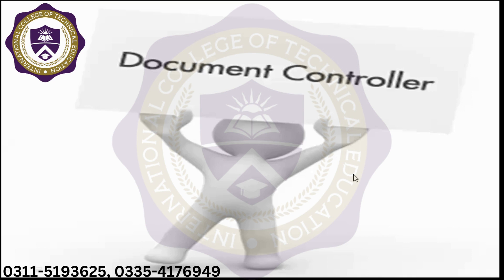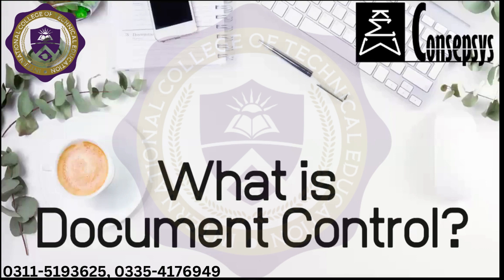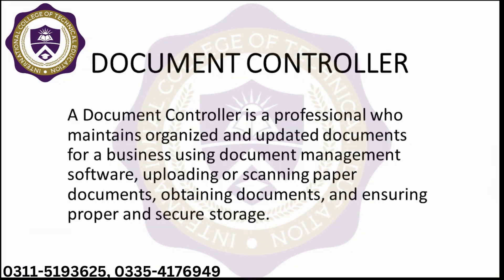As you can see in the image, the stages are: control, create, review, approve, and publish. First you have to create, then you have to review through the documents, then the documents will be approved, then they will be published, and after that the scenario will continue in this cycle.